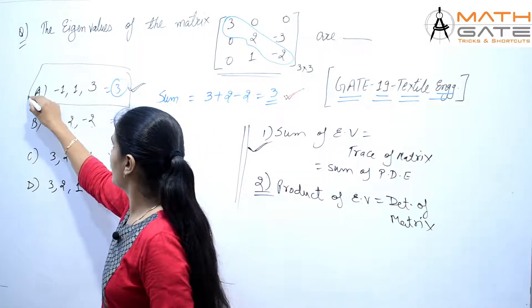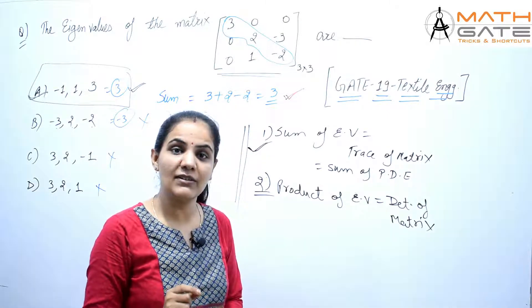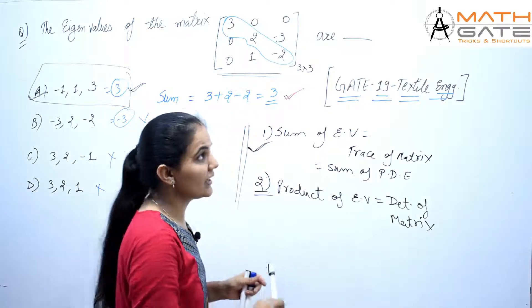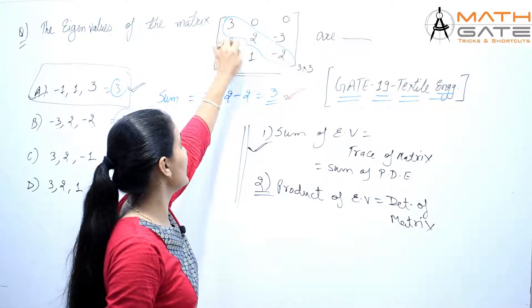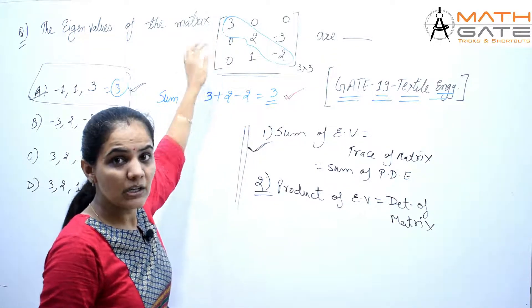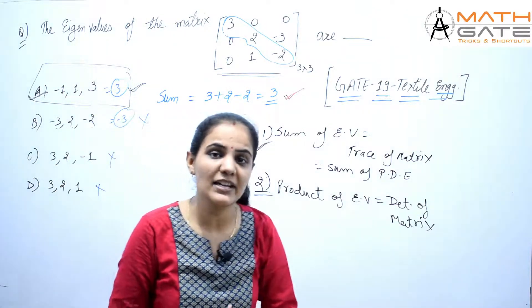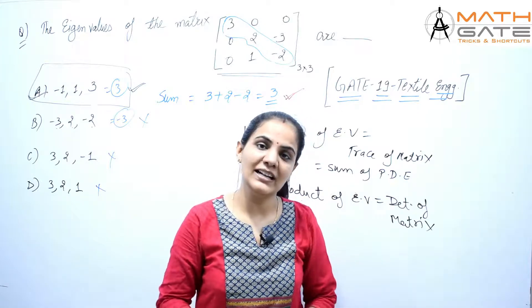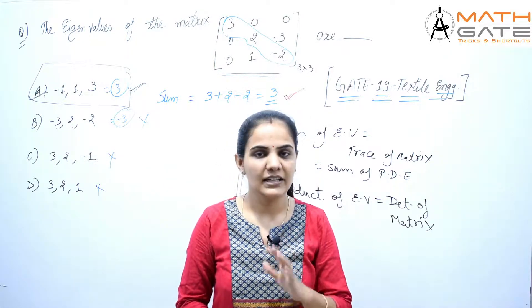For this question you don't need much effort. Even if you don't use a pen, the question can be solved. You calculate the sum verbally: 3 plus 2 minus 2, which becomes 0, giving you 3. The answer of this question is only option number A. Okay students, thank you.